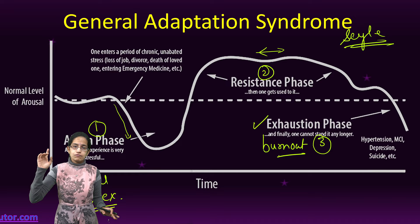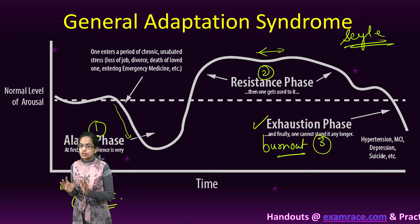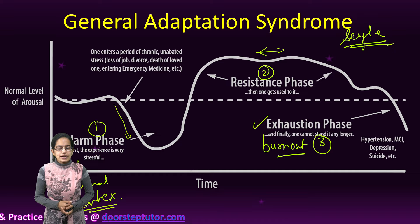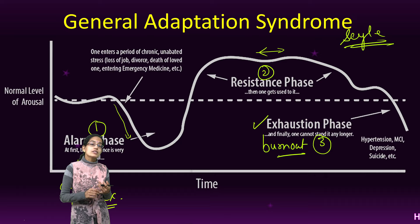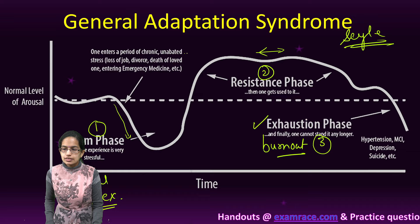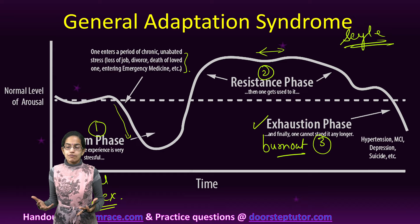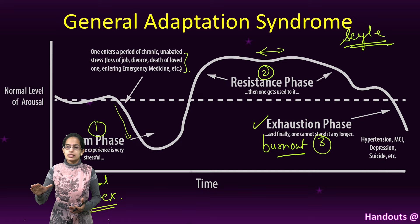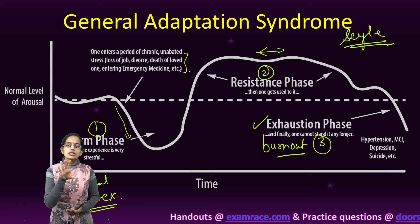Selye talked about this model and how changes in the level of an individual's phenomena take place in response to a stressful situation. But his model was criticized a lot because he limited the psychological factors affecting stress. The major factors he covered were real-life extreme factors — loss of job, death of someone, or a medical emergency — keeping psychological stress at a lower end.